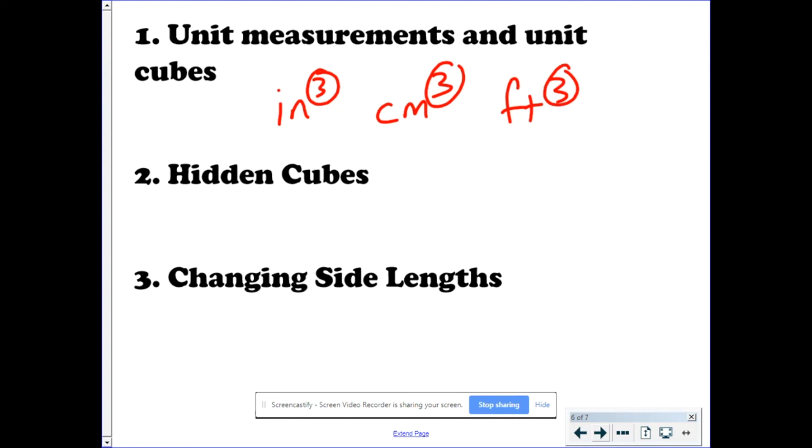And lastly, changing side lengths. If the side length isn't equal to 1, it's not a unit cube. So you can't just count the cubes. Instead, find out what the volume of one of the rectangular prisms or cubes is, and then multiply it by the number of cubes. That will give you the figure's total volume.